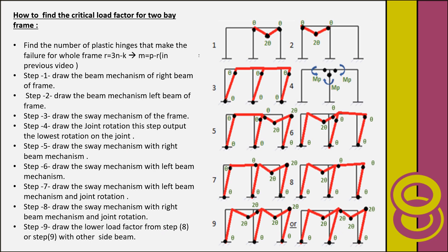To find the critical load factor for a two-bay frame, we must know that we need sufficient plastic hinges for the structure to become a mechanism — this is called the mechanism condition. So we start from step one: draw the beam mechanism of the right beam of the frame.